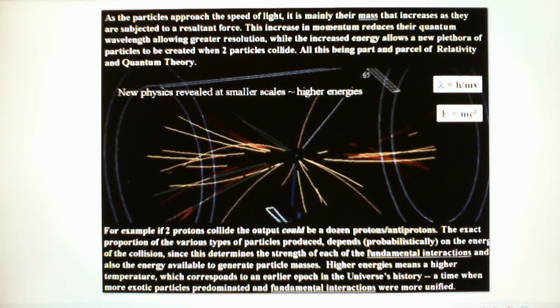There is a particular computer animation of what has been detected in some of these high energy particle accelerators. As the particles approach the speed of light, it is mainly the mass that increases as they are subjected to the resultant forces of the accelerator. This increase in momentum reduces their quantum wavelength, therefore allowing greater resolution. But also, the increased energy allows a new plethora of particles to be created when two such collisions occur between two particles. All this has been explained by theory of relativity and quantum theory.